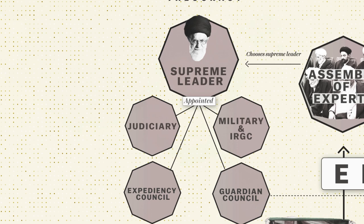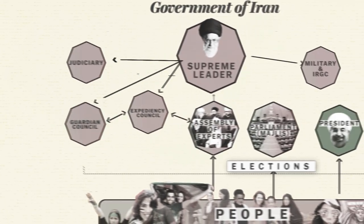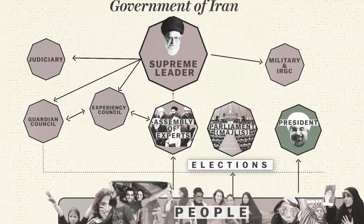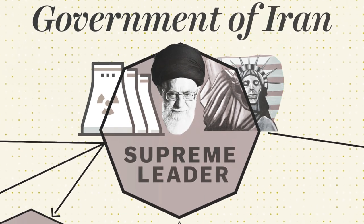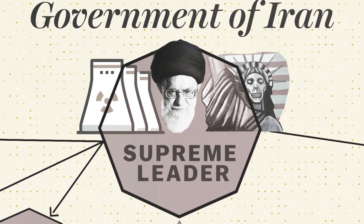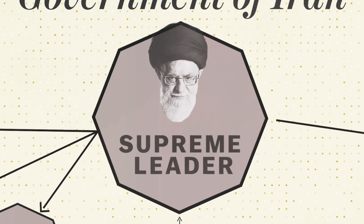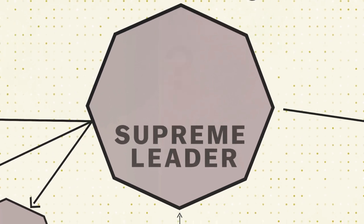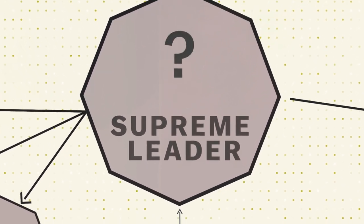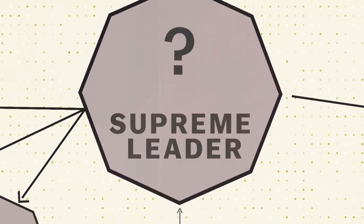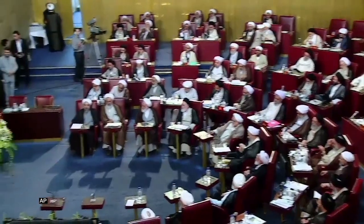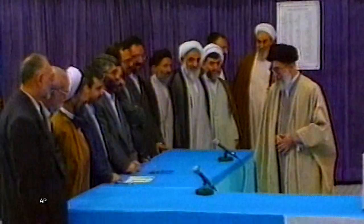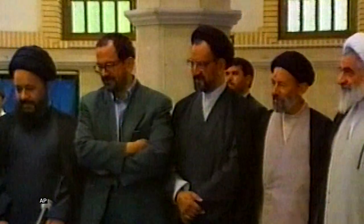Still, the supreme leader really does dominate Iran. He sets the tone for the country's politics and policies, including its nuclear program and its official hostility to the West. But what happens when the supreme leader dies or gets sick? This turns out to be a really important question. The supreme leader is picked by a group of about 90 senior Iranian political and clerical leaders called the Assembly of Experts.